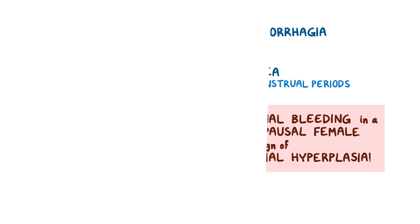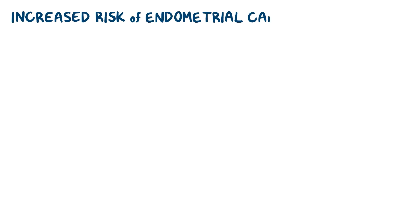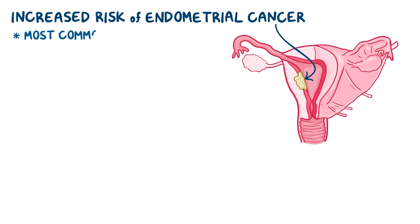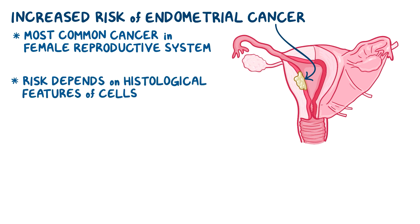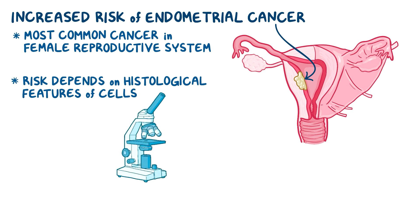The most concerning problem with endometrial hyperplasia is that it increases the risk for endometrial cancer, which is the most common cancer arising from the female reproductive system. The risk of developing endometrial cancer depends on the histological features of the cells undergoing hyperplasia, which means how they appear under the microscope.